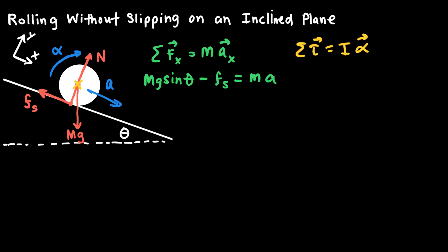For this torque, I'll write Fs times R, where R is the radius — the distance from the contact point at the surface to the center of mass. Because the frictional force and the moment arm are perpendicular to one another — 90 degrees apart — the sine of 90 degrees is 1, so the torque is simply Fs times R. On the right-hand side, I'll leave this as I times alpha for a generic moment of inertia, where the angular acceleration is positive.